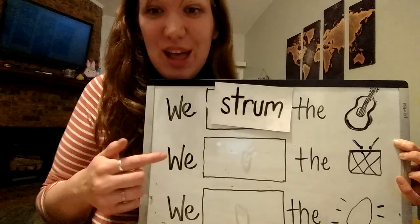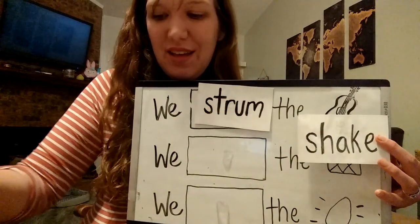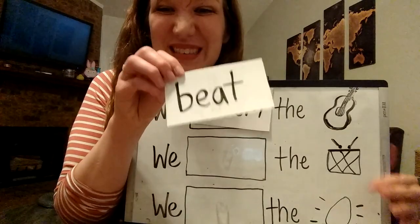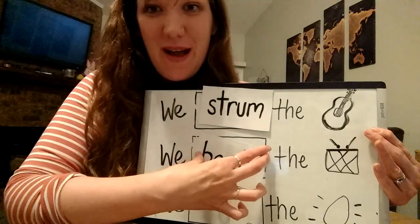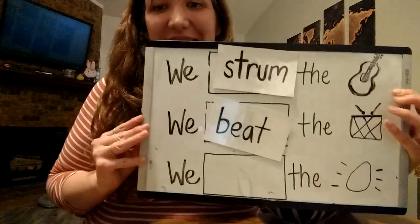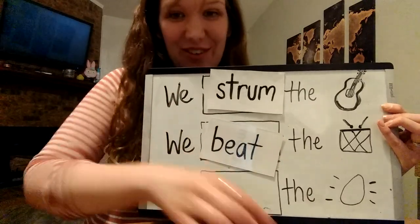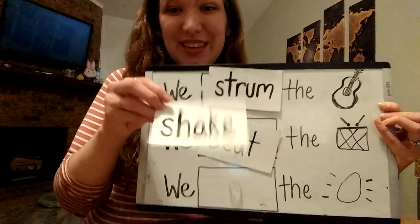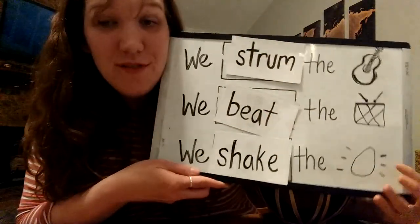What do we do with the drum — do we shake it or beat it? Yes, we beat. We beat the drum. Now, what do we do with the egg shakers? Only one verb left — can you say it? Shake. We shake the egg shakers. Now we've made a song!